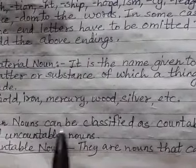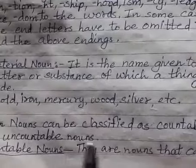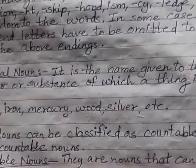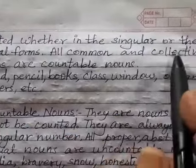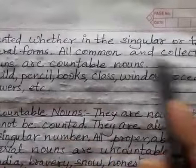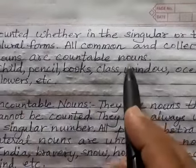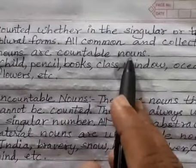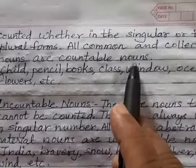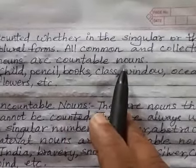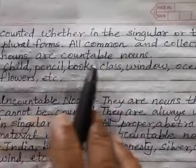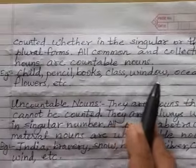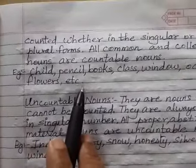The sixth classification is countable and uncountable nouns. Countable nouns are nouns that can be counted in singular or plural form. All common and collective nouns are countable nouns. Examples include: child, pencil, books, class, window, ocean, and flowers. These are all countable nouns.